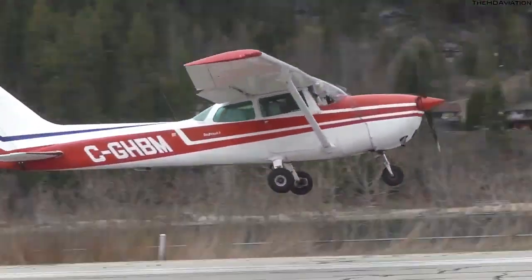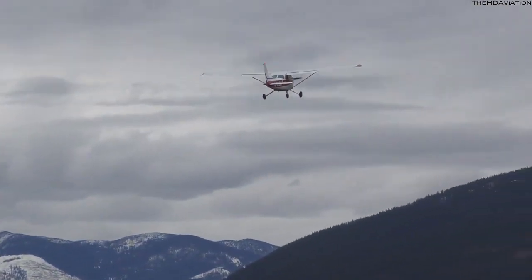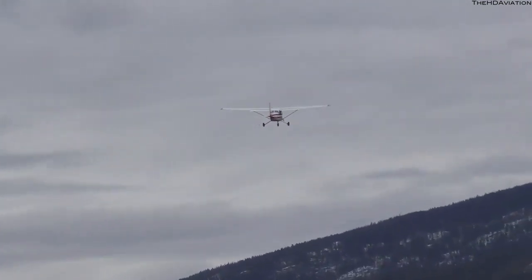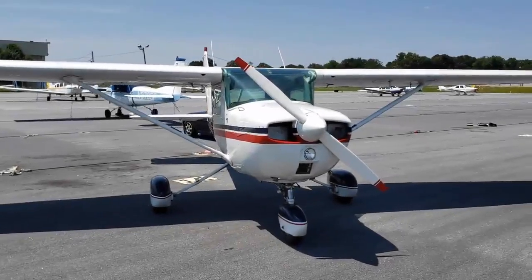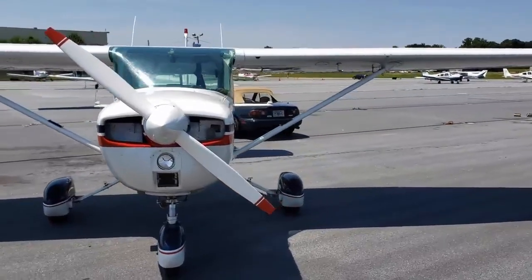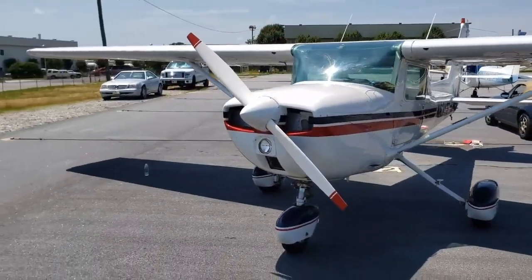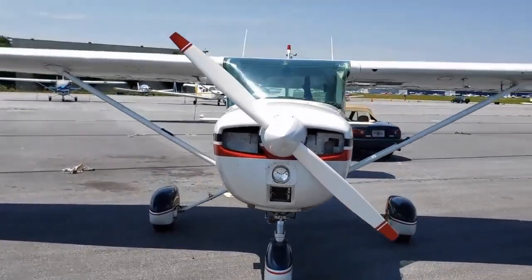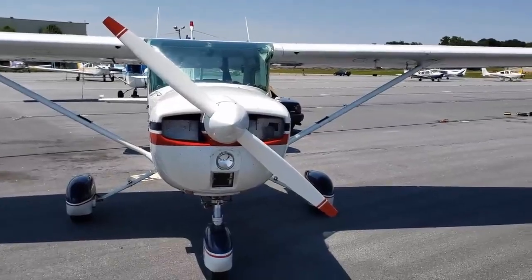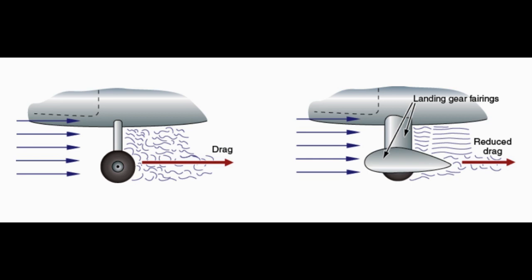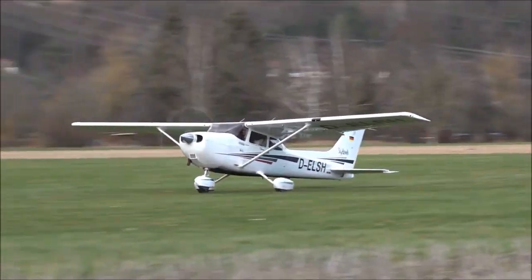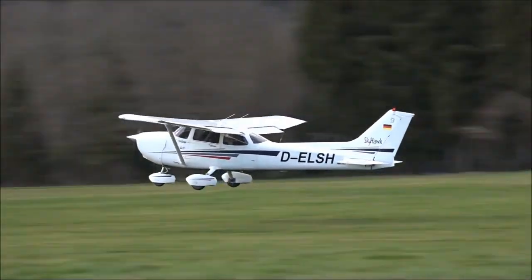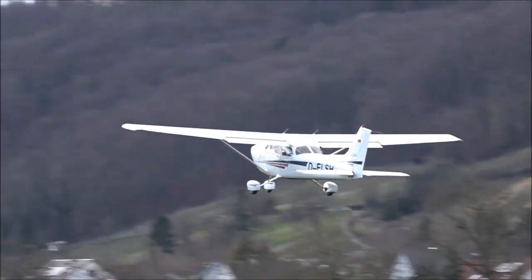Many small single-engine light aircraft have fixed landing gear, as do a few light twins. This means the gear is attached to the airframe and remains exposed to the slipstream as the aircraft is flown. As the speed of an aircraft increases, so does parasite drag. Mechanisms to retract and stow the landing gear to eliminate parasite drag add weight to the aircraft. On slow aircraft, the penalty of this added weight is not overcome by the reduction in drag, so fixed gear is used. As speed increases, the drag caused by the landing gear becomes greater and retraction becomes necessary. A great deal of parasite drag can be reduced by building gear as aerodynamically as possible and by adding fairings or wheel pants to streamline the airflow past the protruding assemblies.